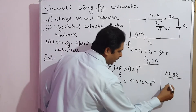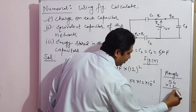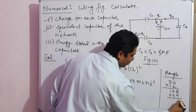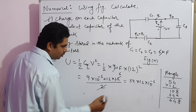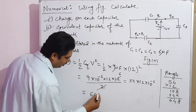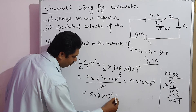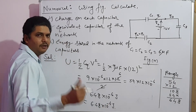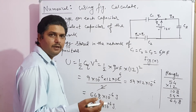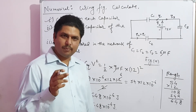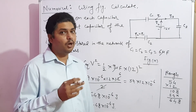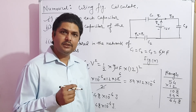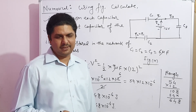Calculating: 9 into 6 equals 54, and 54 into 12 equals 648. So U equals 648 into 10 to the power minus 6 joule, which can also be written as 6.48 into 10 to the power minus 4 joule. Thus we have covered the energy stored inside the capacitor — formula and numerical. Next, you have to learn about energy density, that is energy divided by volume inside the capacitor. Thank you.